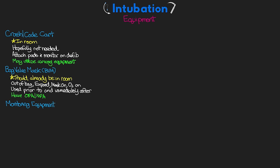Also make sure you have an oropharyngeal or nasopharyngeal airway available in the event that's needed to aid in ventilating the patient. For monitoring equipment, your patient's probably already on the monitor, but make sure you have ECG leads on, SpO2 monitoring, and a blood pressure cuff on and hooked up. Ensure you have a good reading and waveform on the SpO2, and have the BP cuff cycling at least every five minutes for now.